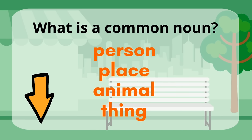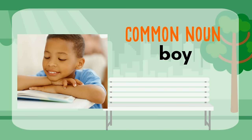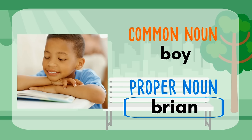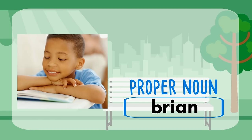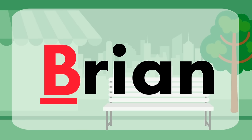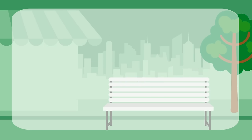A boy is a common noun because a boy is a person. But let's give him a special name — his name is Brian. Brian is a proper noun because it's the special name of the boy. A boy is a common noun and Brian is a proper noun. Now, when you give someone or something a special name, you must capitalize the first letter — a capital B for Brian.